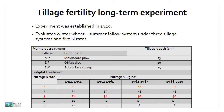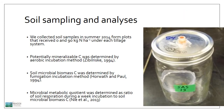We used the tillage fertility long-term experiment for this purpose. This experiment was established in 1940 in a wheat fallow system, and has three tillage systems and five nitrogen rate treatments replicated three times. The three tillage systems include moldboard plow tillage, offset disc tillage, and soil surface sweep. From 1988 to 2010, five nitrogen rates were compared in this study: 0, 45, 90, 135, and 180 kg nitrogen per hectare. Soil samples were collected during summer 2014 from plots that received 0 and 90 kg nitrogen application under each tillage system.